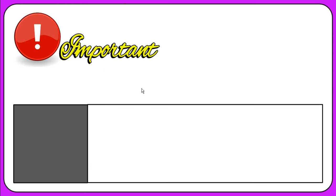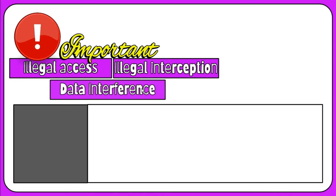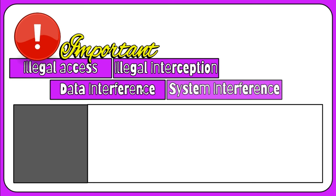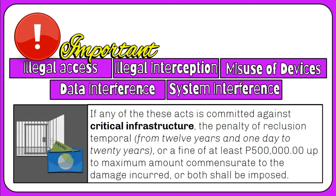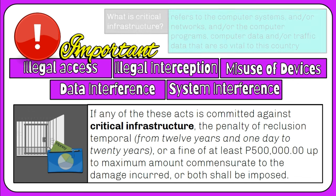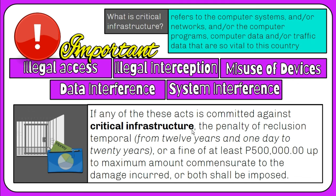If illegal access, illegal interception, data interference, system interference, and misuse of devices is committed against critical infrastructure, the penalty of imprisonment from 12 years and 1 day to 20 years, or a fine of at least 500,000 pesos up to a maximum amount commensurate to the damage incurred, or both, shall be imposed.